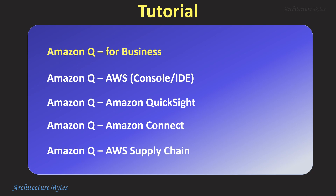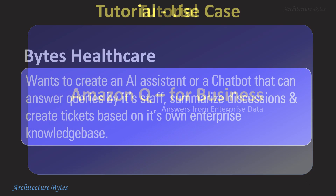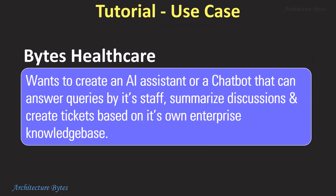The focus of our tutorial is Amazon Q for Business, so let's begin. For our tutorial, Bytes Healthcare — a fictitious company — wants to create an AI assistant or chatbot that can answer queries by its staff, summarize discussions, and create tickets based on its own enterprise knowledge base.